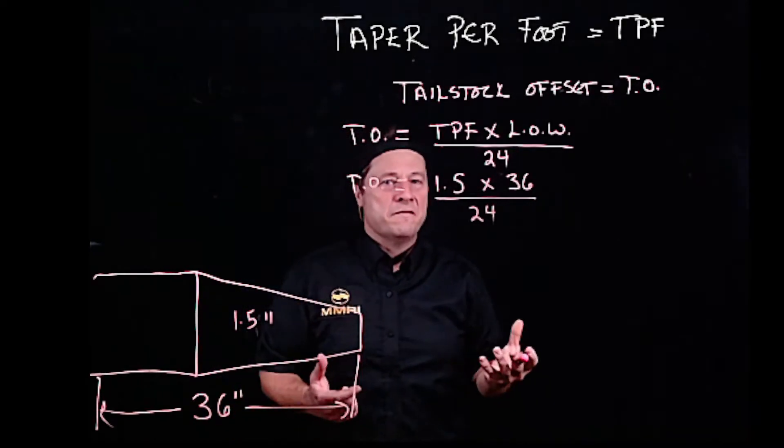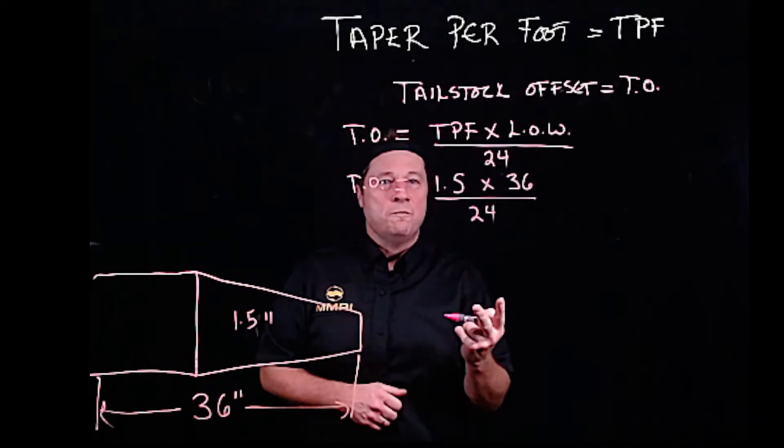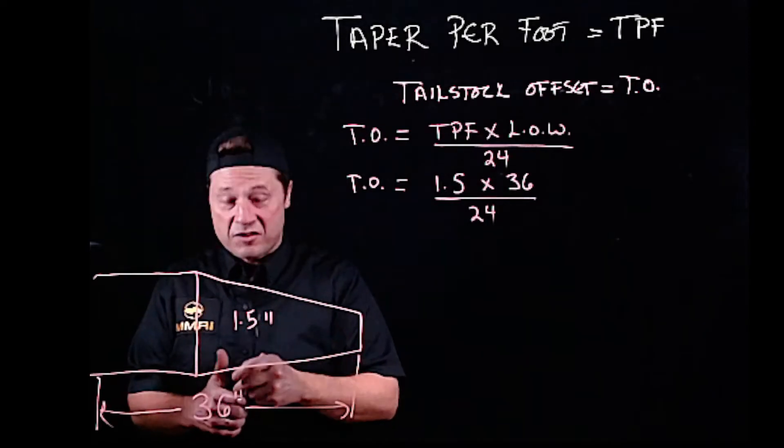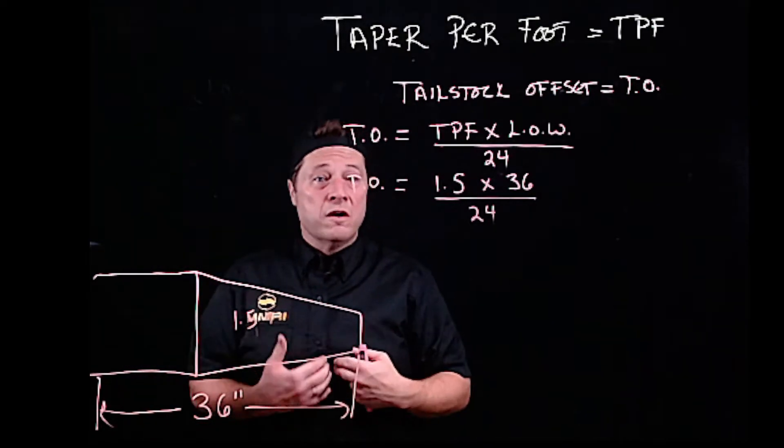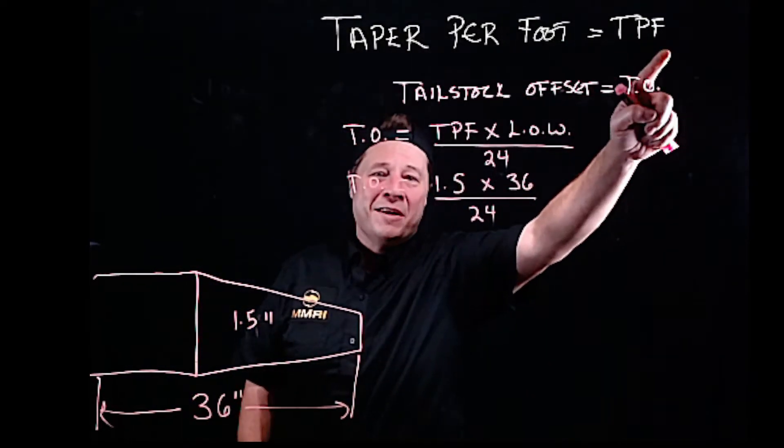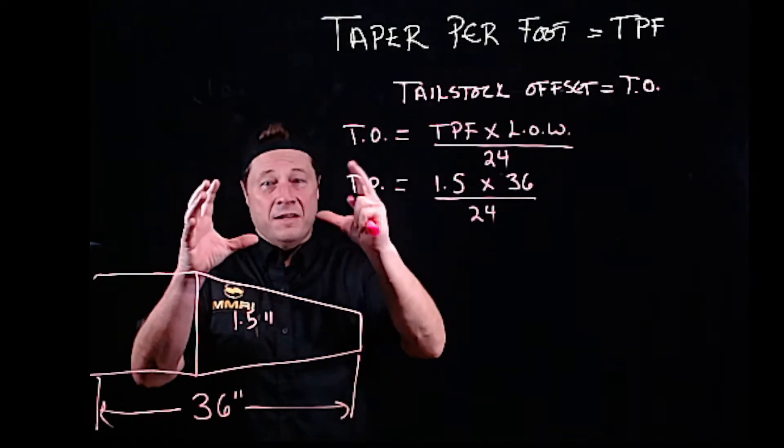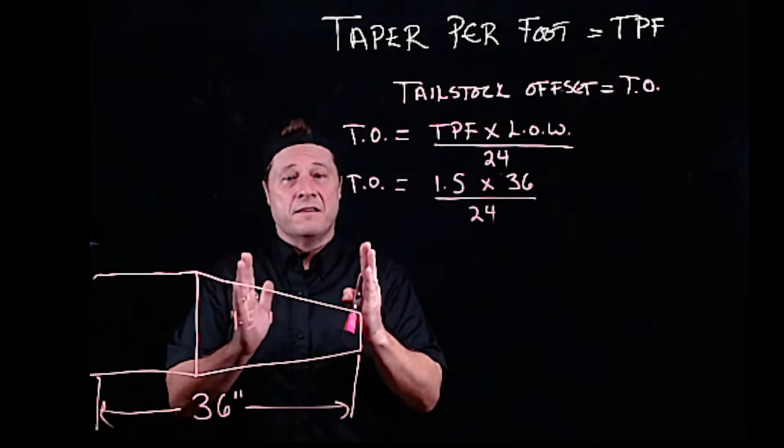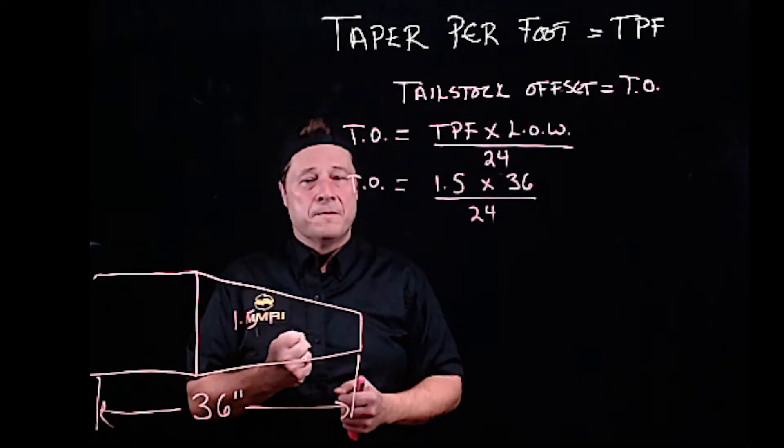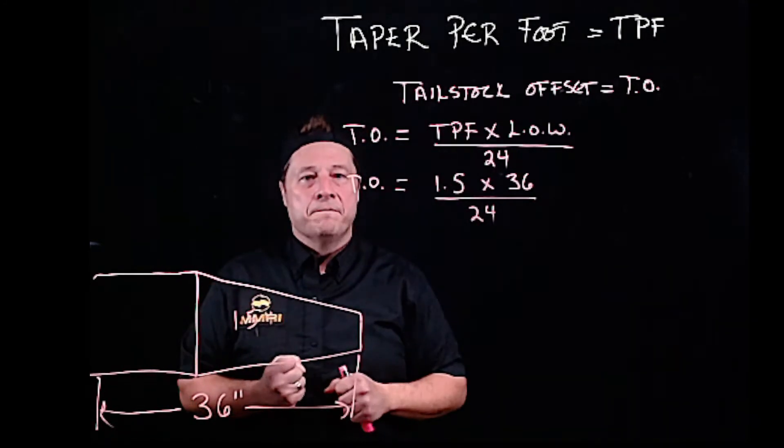Tailstock offset is very simple to solve. We literally just need two pieces of information: taper per foot is going to be given to you or you have to solve it based on big diameter minus little diameter divided by the length of the taper times 12. As soon as you get that number, you plug it in there.